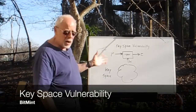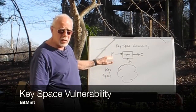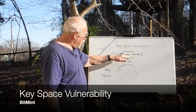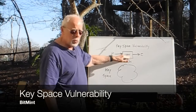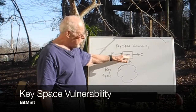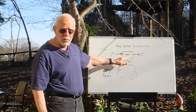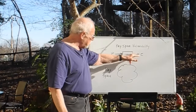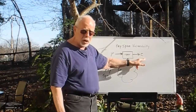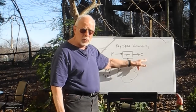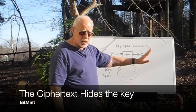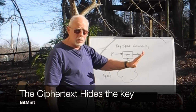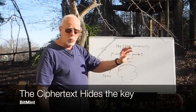That's how it works. We have a plain text, a secret, put it into a cipher together with a key — some number — and create the ciphertext. The ciphertext we release in the open. That's our protection.